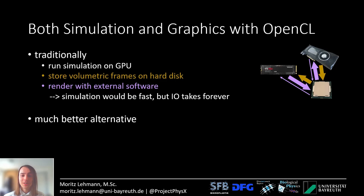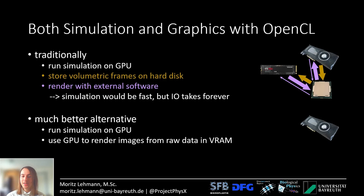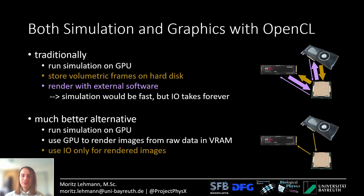The alternative approach is much better and much faster. It starts with running the simulation on the GPU, then using the GPU to also render images from the raw simulation data that resides in video memory — so the GPU already has access to this data and the bandwidth is ultra fast. I only use the IO to store the rendered images on the hard disk, and this is even fast enough for interactive graphics.